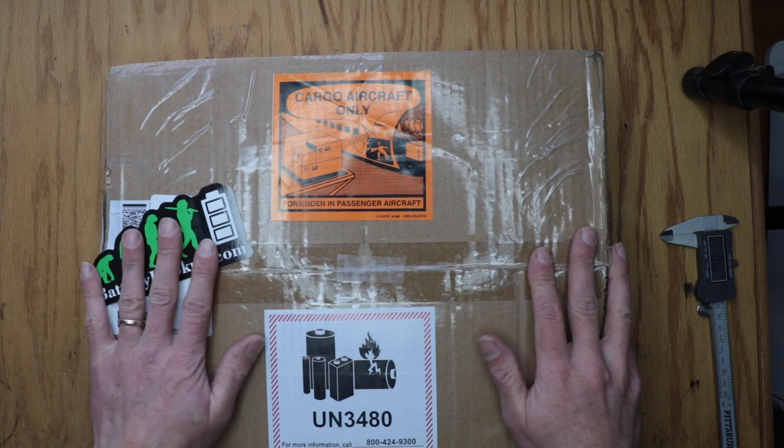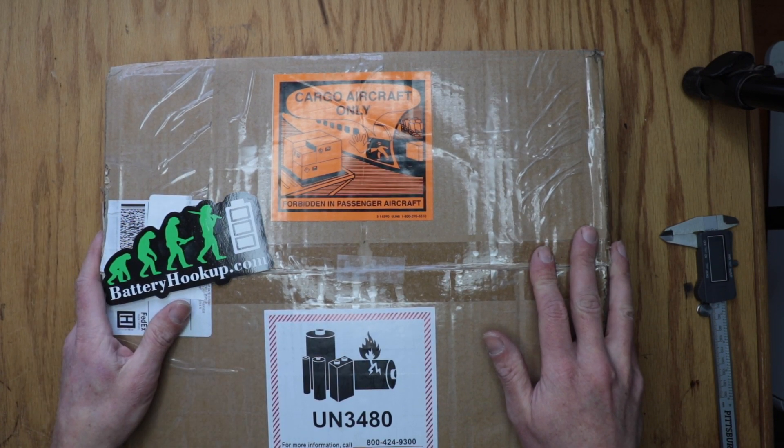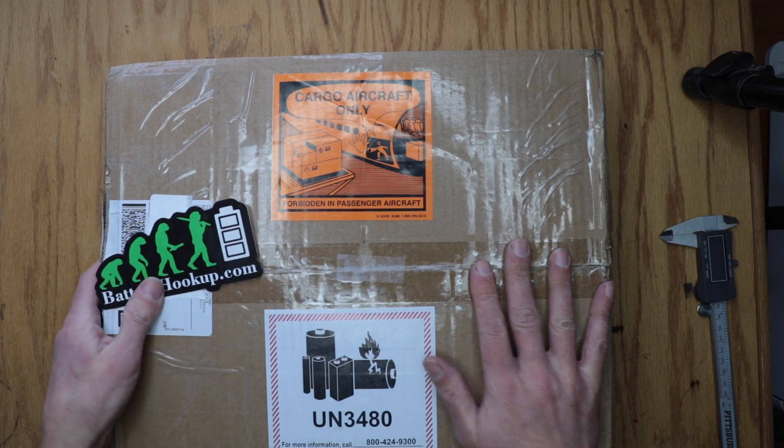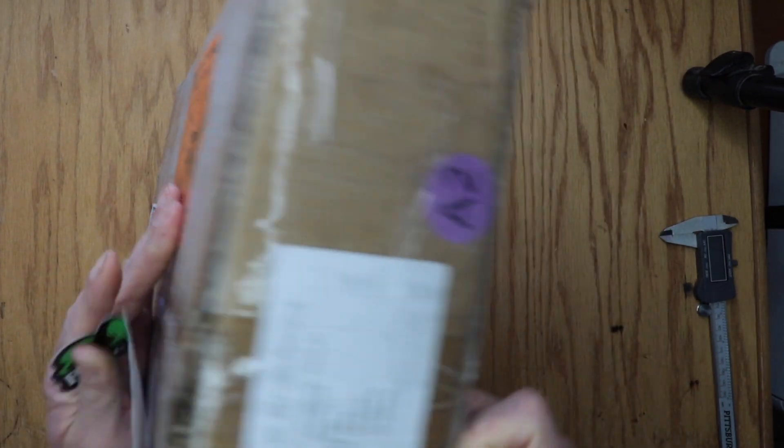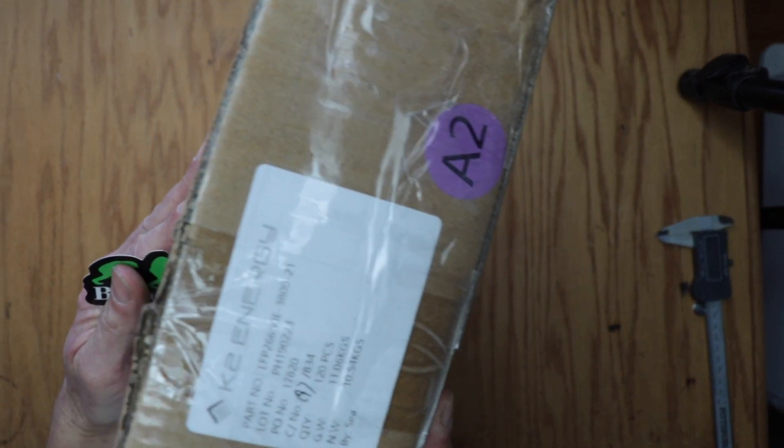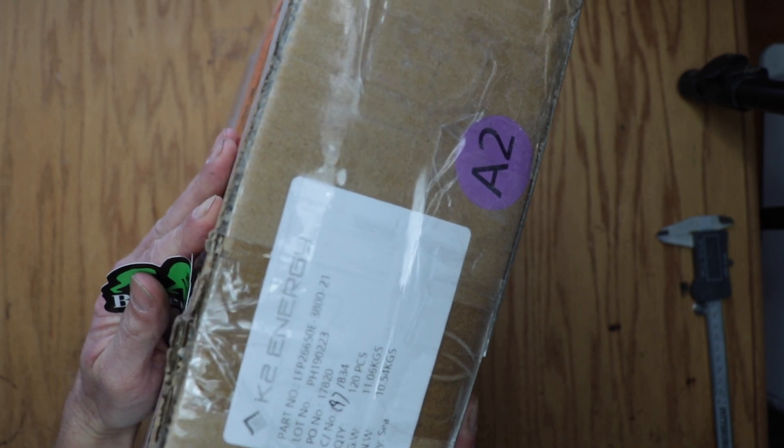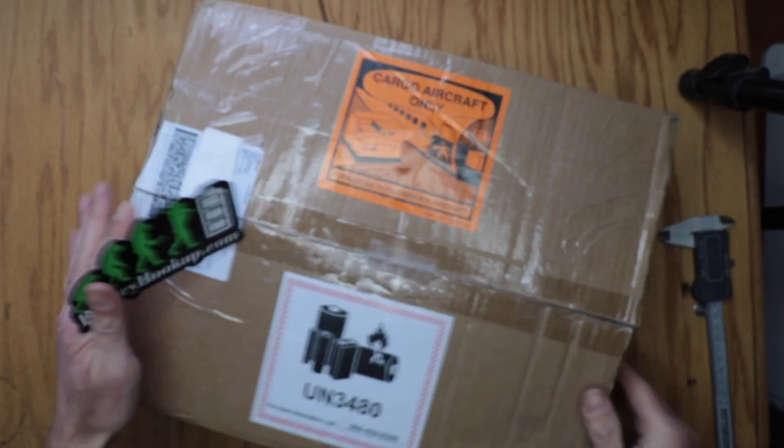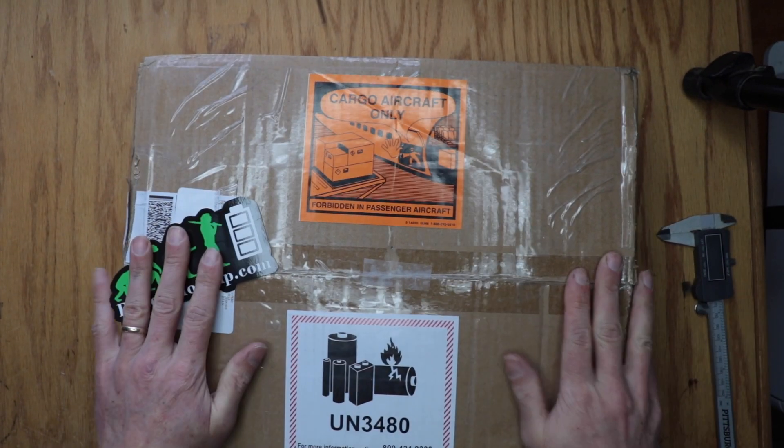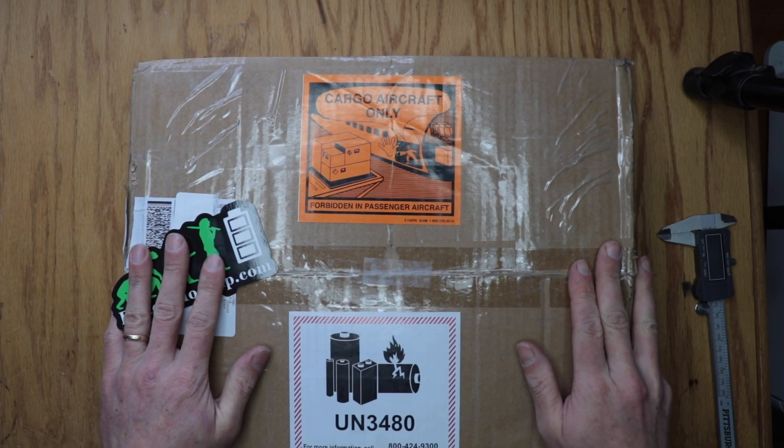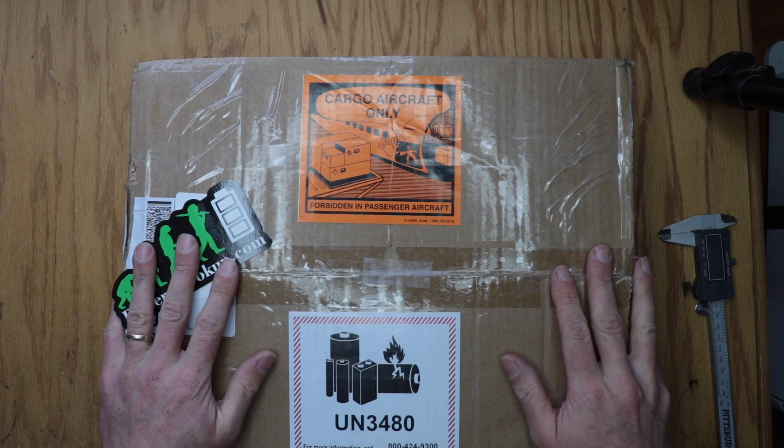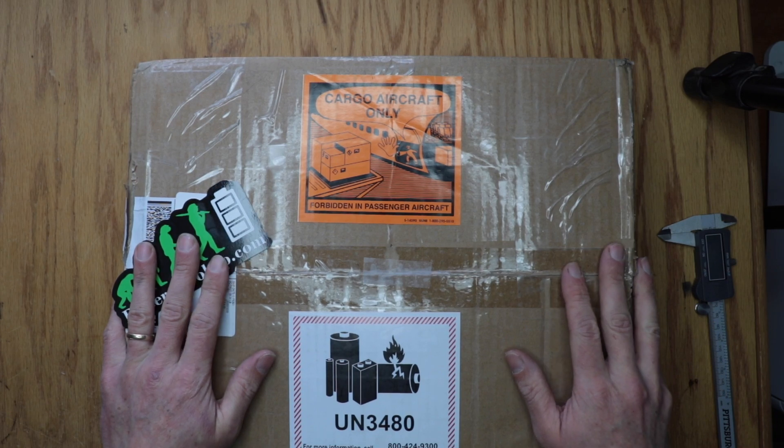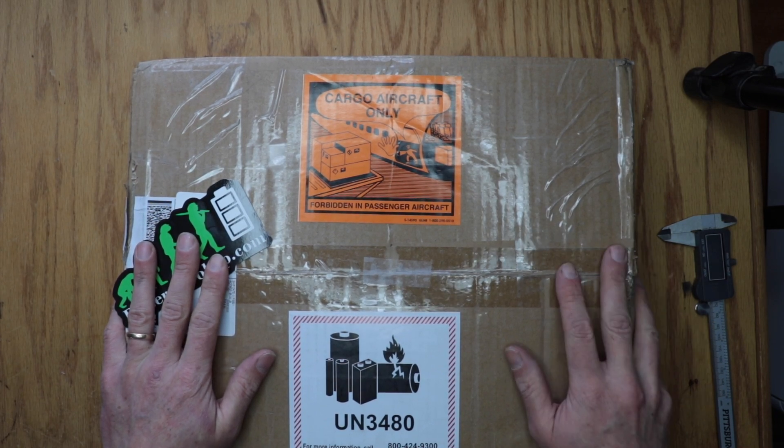So I'll just open this box and see how these are shipped. These are the actual case packs from the company K2. They have information here about their lot numbers and everything else, the PO number. These according to Battery Hookup were used for military EV applications and these are what was left over. So they've got lots of cases of these.